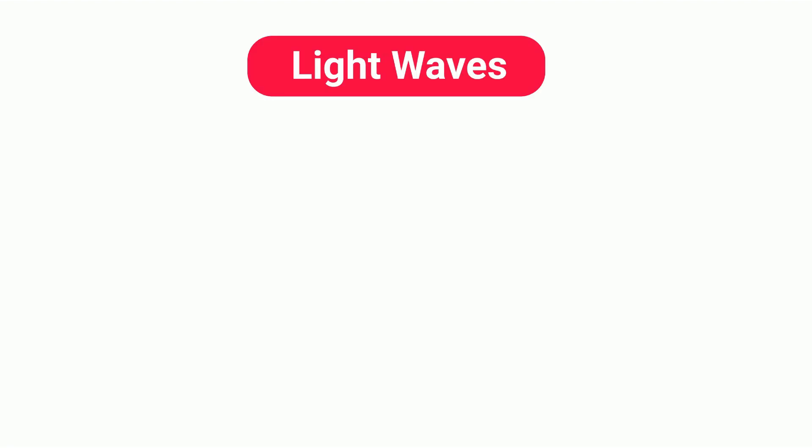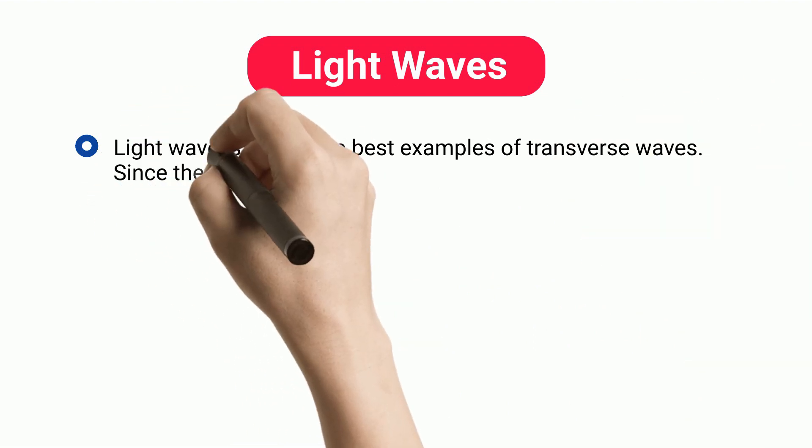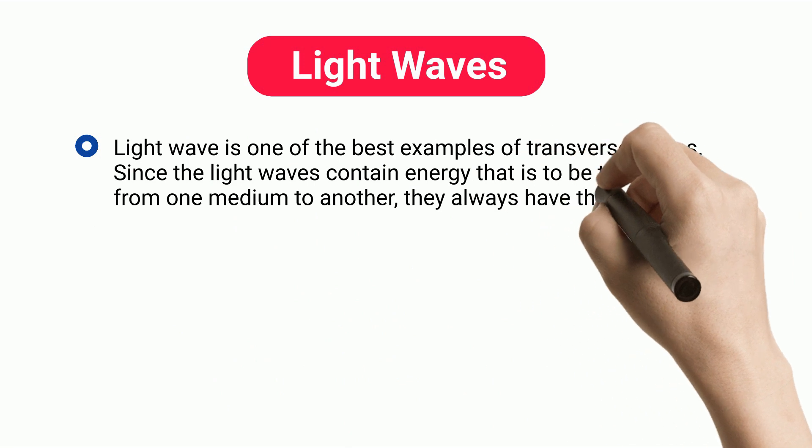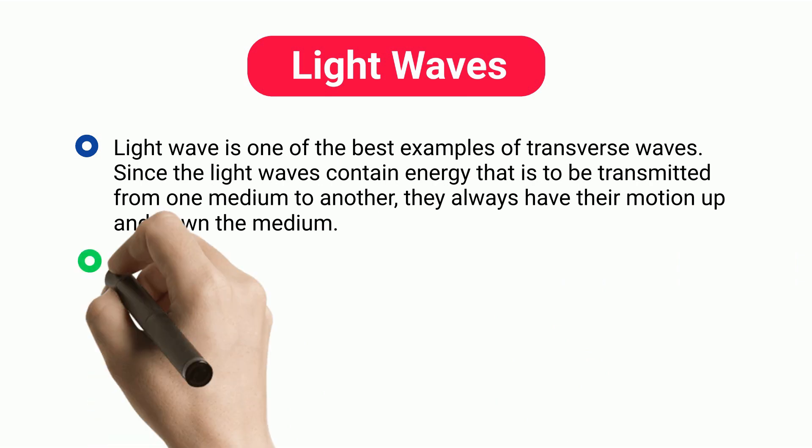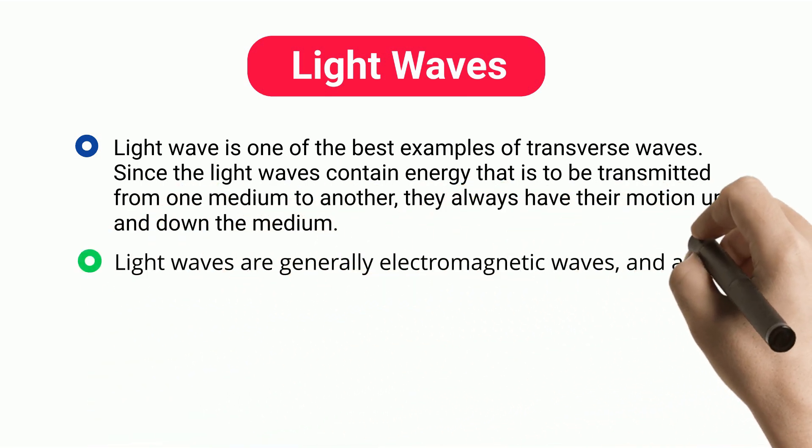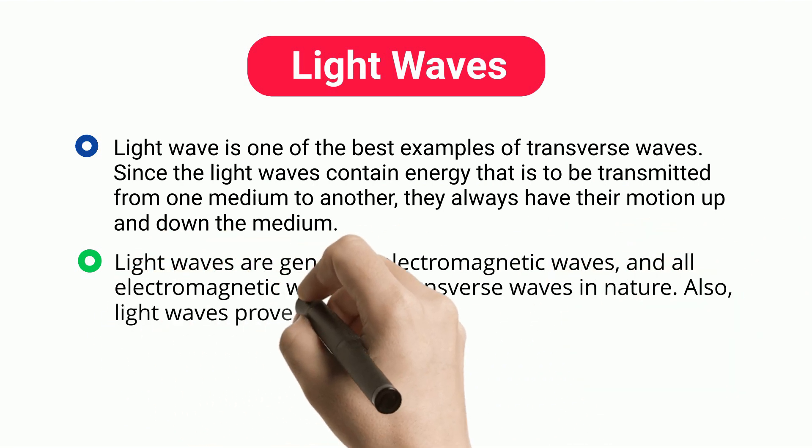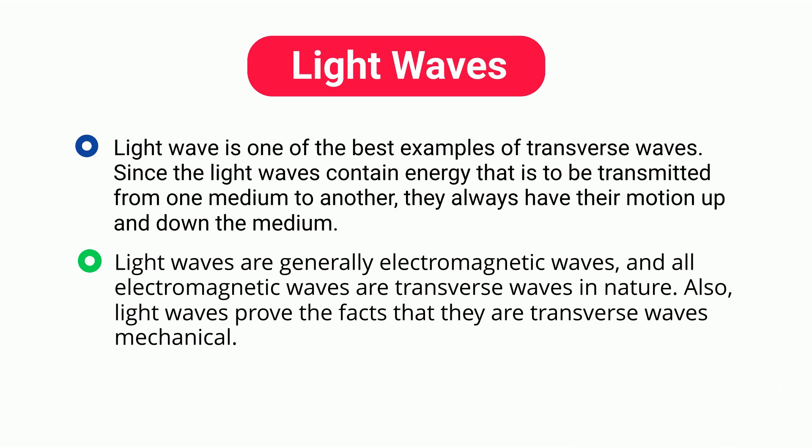Light waves. Light wave is one of the best examples of transverse waves. Since the light waves contain energy that is to be transmitted from one medium to another, they always have their motion up and down the medium. Light waves are generally electromagnetic waves, and all electromagnetic waves are transverse waves in nature. Also, light waves prove the facts that they are transverse waves mechanical.